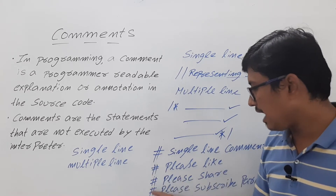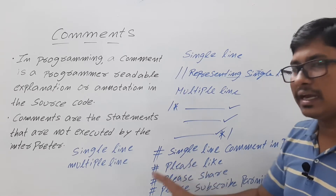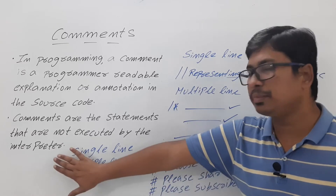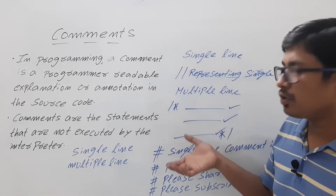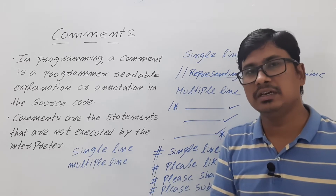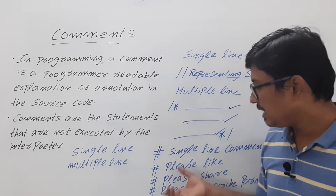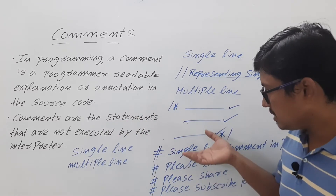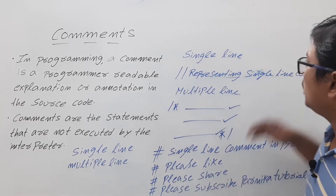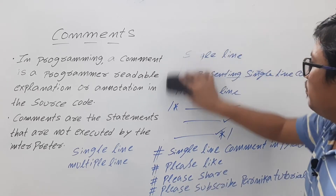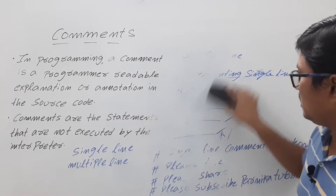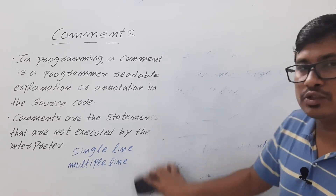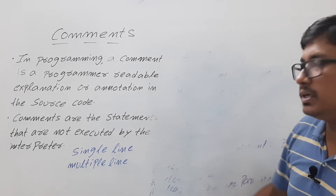You should write a hash before each comment line. Whenever you write a comment with a hash before it, the interpreter will never execute it. When converting the high-level code to bytecode, the interpreter will ignore it. That is the purpose of single line and multiple line comments. Now let me discuss Python documentation strings, which we call doc string comments.